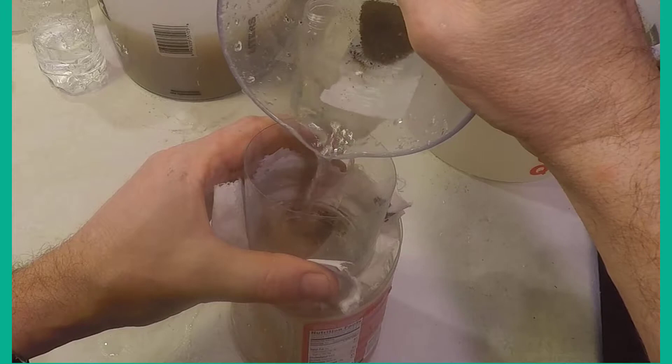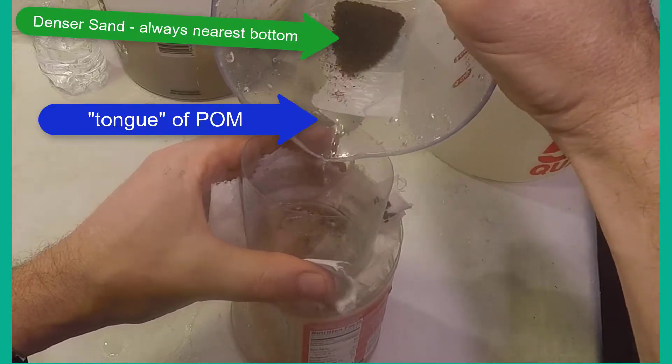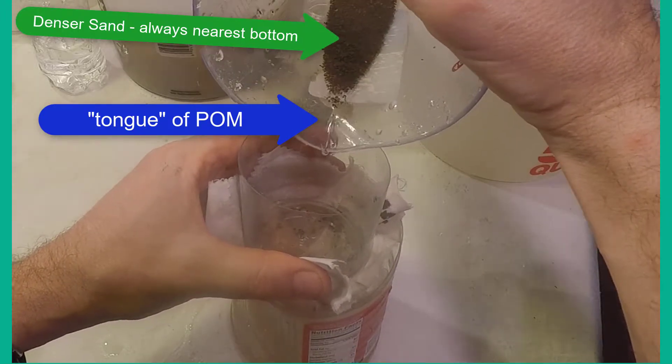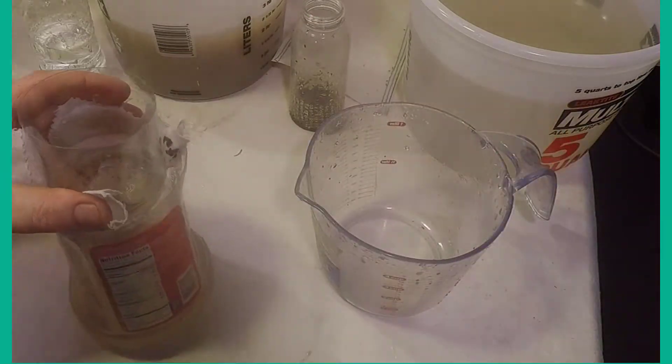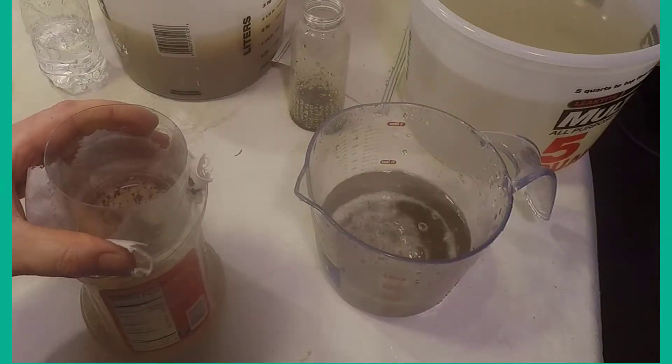You'll notice with successive repeats of decanting that the organic matter forms a small tongue that advances ahead of the denser sand at the bottom of the container.